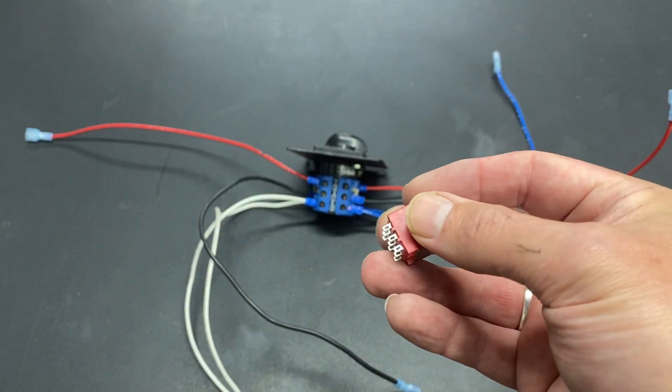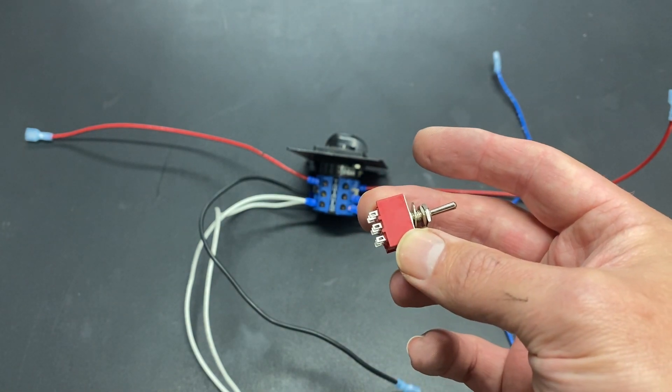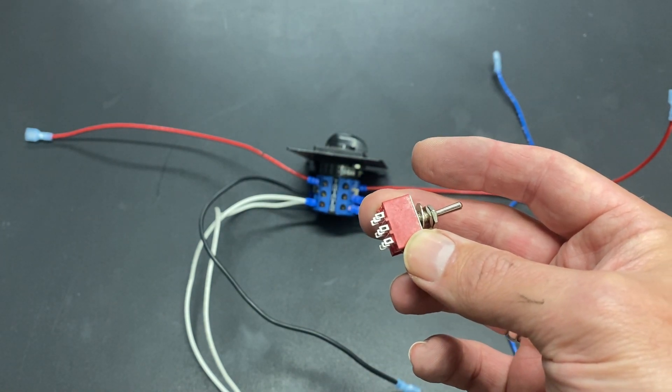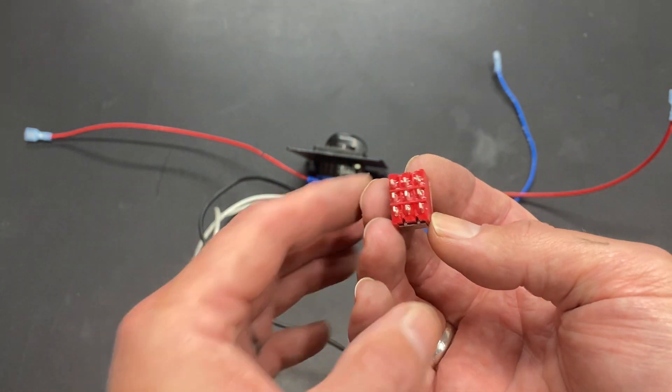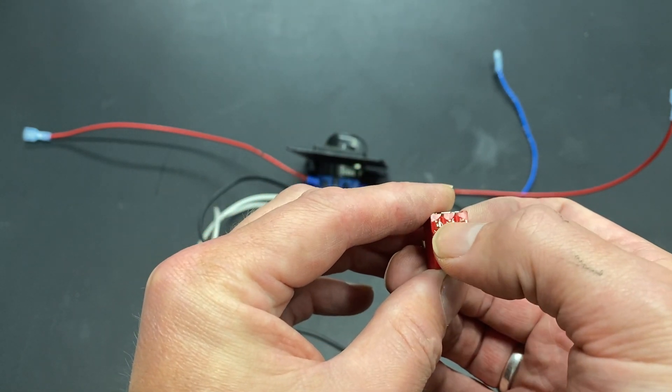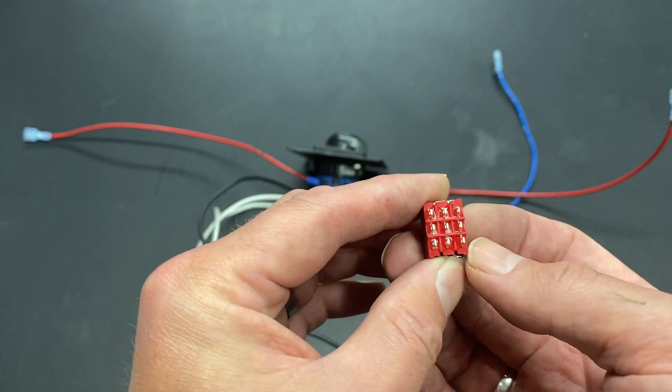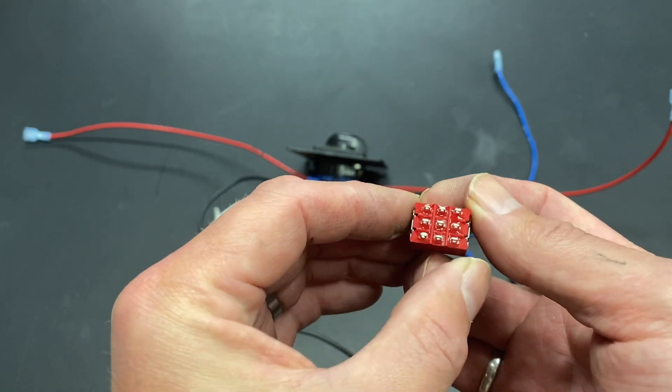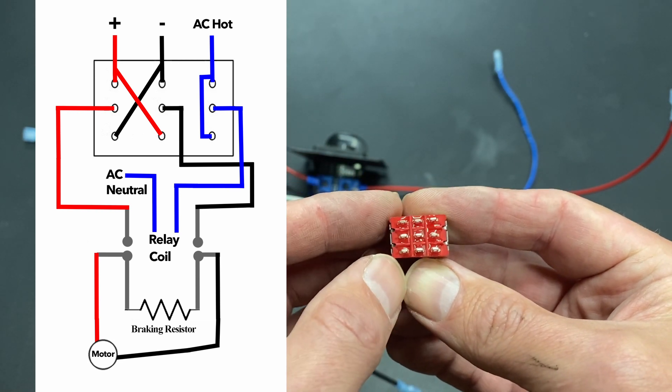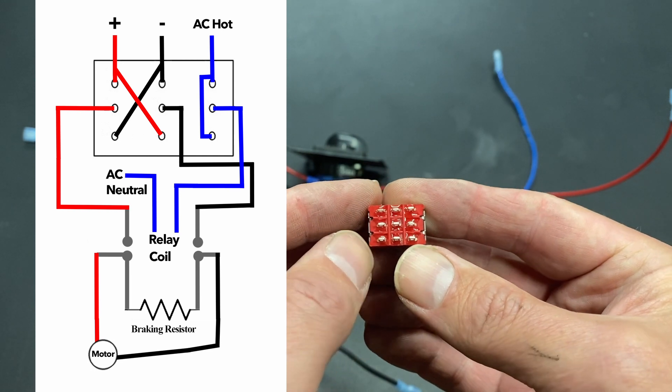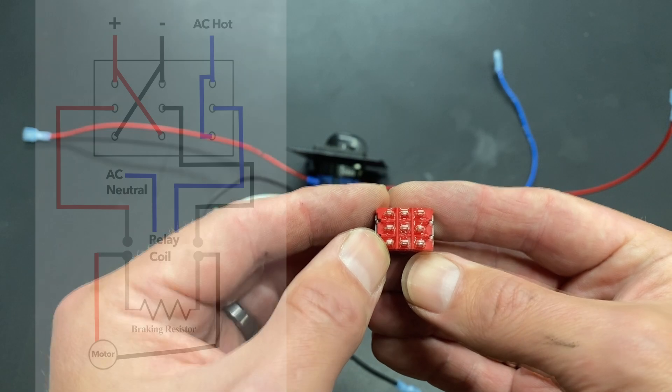So this is a triple pole double throw switch. Now this is way too small for this application but the good news is this is configured the exact same way that a switch that is large enough for this application would be. The center terminals are the ones being switched and they're either being switched to this side or this side up the row. So we wire this just the way we would with a double pole double throw switch using these six terminals to control the forward and reverse direction and using these three terminals to turn off and on the AC that goes to the coil.